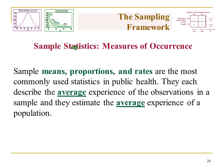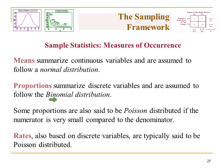Means are the average of a continuous variable, assumed to follow a normal distribution. Proportions — which is what we mostly talk about in epidemiology, and what we'll mostly discuss in this training course — summarize discrete variables and are assumed to follow the binomial distribution. Sometimes for rare outcomes we also use rates, and those are Poisson distributed. In addition to those measures of occurrence, the measures of association we're typically using in epi include difference measures and ratio measures.